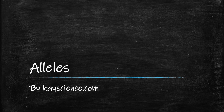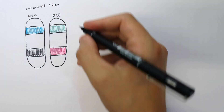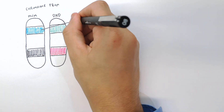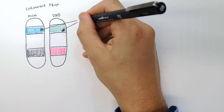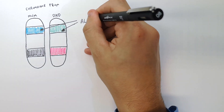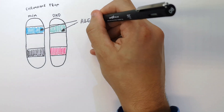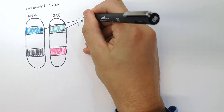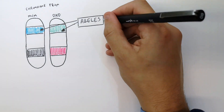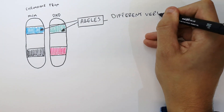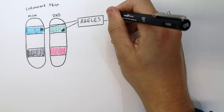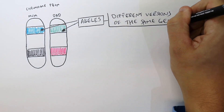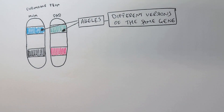Alleles by kscience.com. So this person here has inherited one gene from mum and one gene from dad, and they're different — so they are alleles. Alleles are different versions of the same gene.